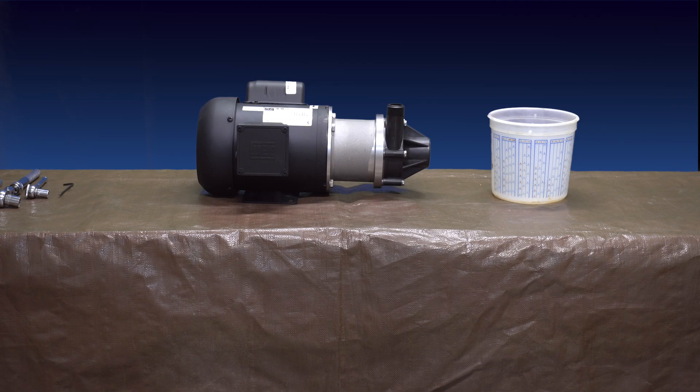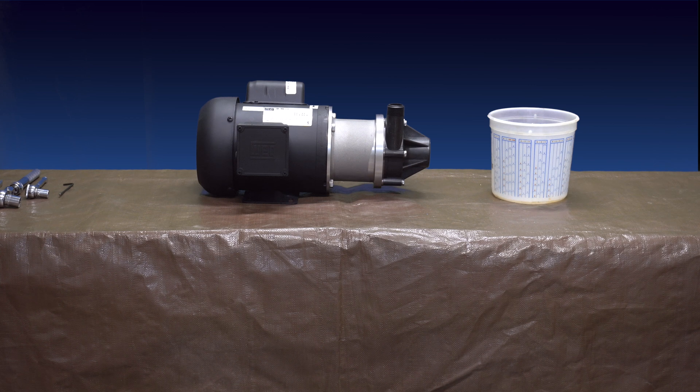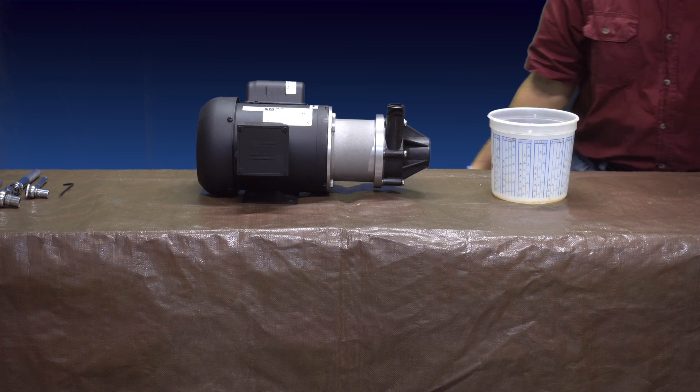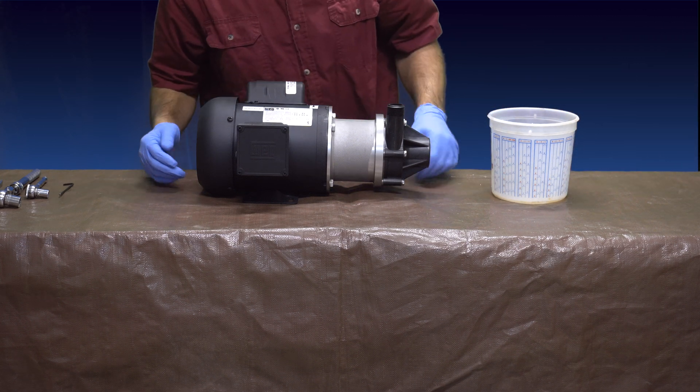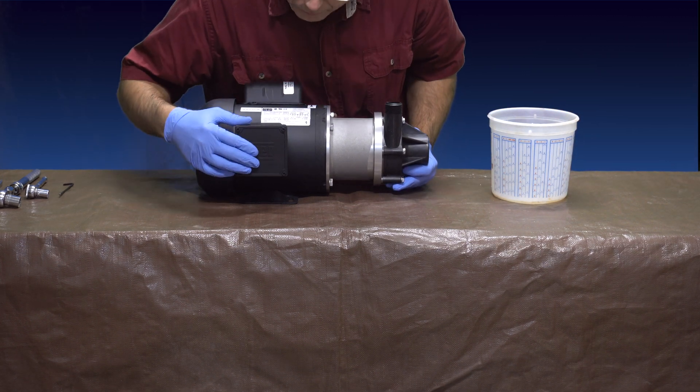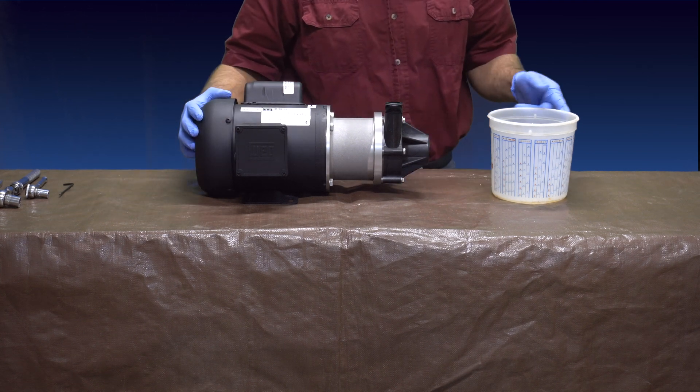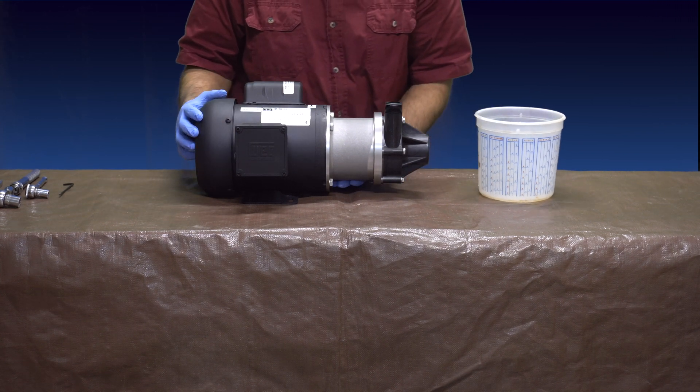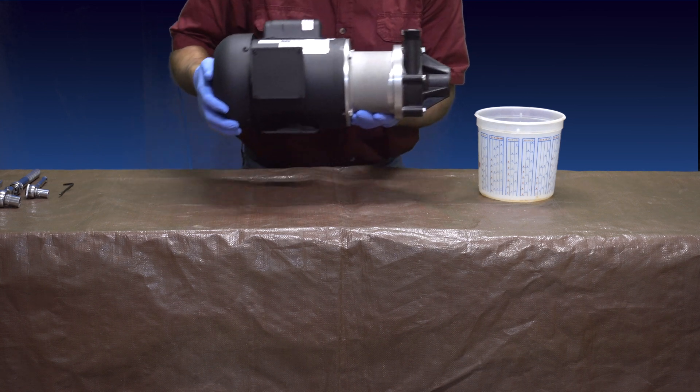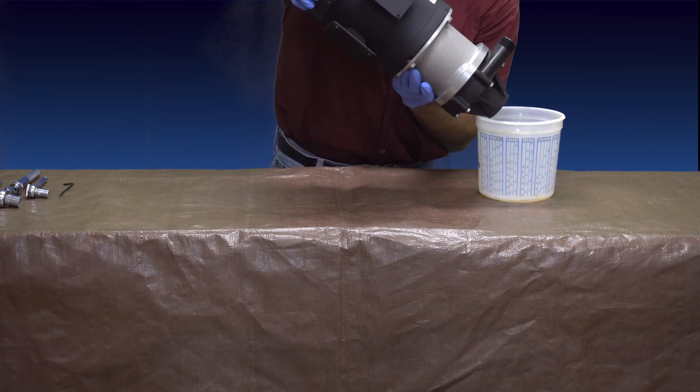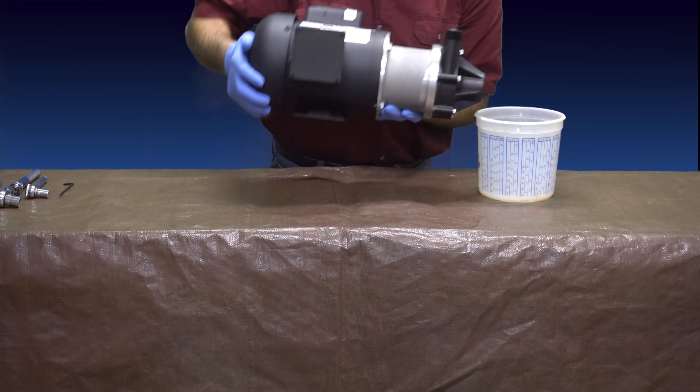We're going to assume that the pump has just been removed from its installation in a working system. Before beginning disassembly of the pump, first do the following. Be sure to disconnect the pump from its power source. Next, drain the pump of any residual liquid that it may contain. This can be done by tipping the front end of the pump forward and allowing any liquid in it to run out of the pump inlet and into a suitable container.